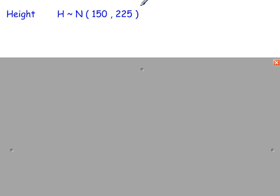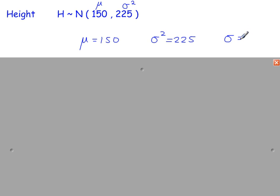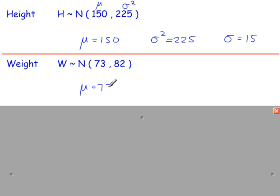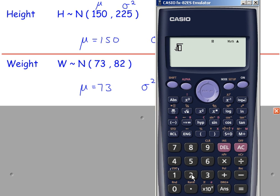In this normal distribution, the population mean is 150 and 225 is the population variance. The population standard deviation is the square root of the variance, so that's 15. Another example: the population mean is 73, variance is 82, and the standard deviation will be the square root of the variance — so 9.06 to 3 significant figures.